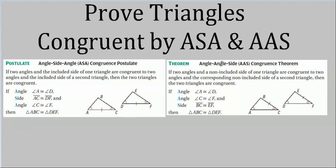Here we have a theorem which is really much more powerful — it says as long as you have two angles that are congruent and one side, any side, pick a side, it doesn't matter, the two triangles are congruent. That's way more powerful than this, and this will be much easier to use. And in fact, if this holds, then this must hold.